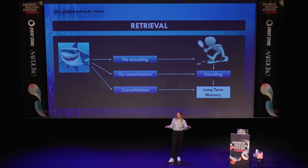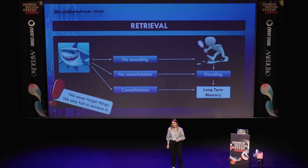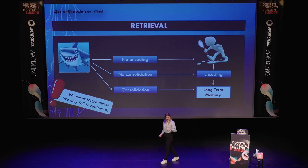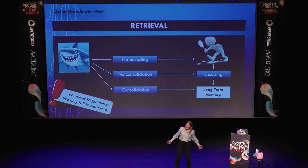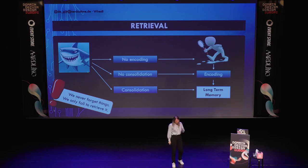Here comes a very cool thing — one of the most mind-blowing things I've learned recently: research has actually shown and proven that we never forget stuff. Once something is in your long-term memory, it stays there. The only issue is that we fail to retrieve it. So you can tell your mom or your partner: 'I'm not stupid, I just fail to retrieve it.' I didn't forget the groceries — I just failed to retrieve them.